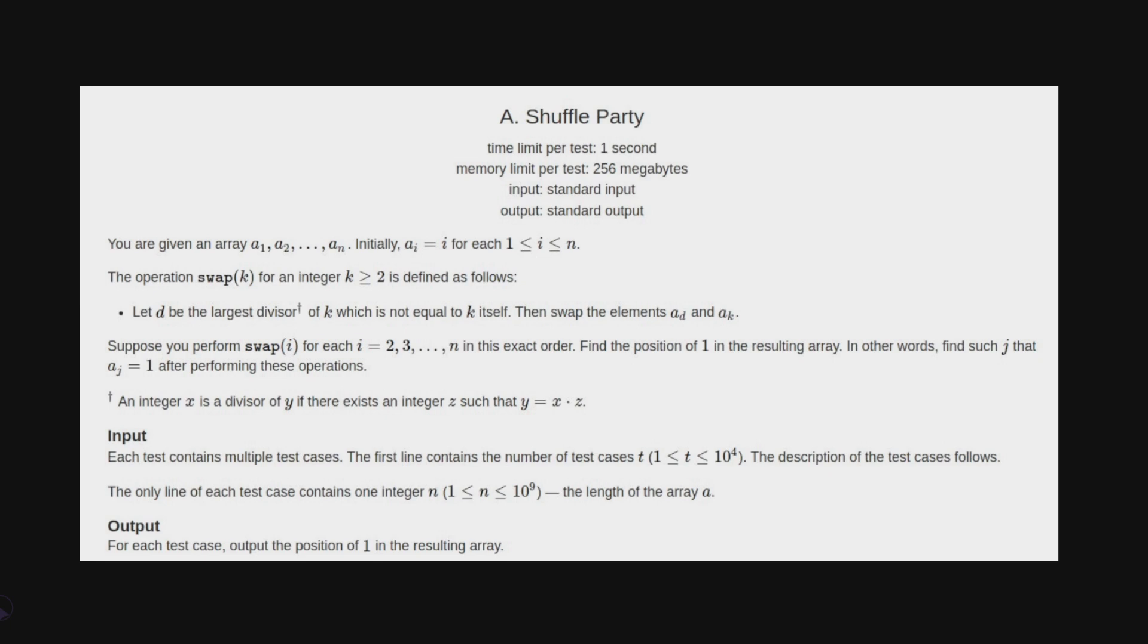An integer x is a divisor of y if there exists an integer z such that y equals x times z. There are multiple test cases and n is in range from 1 to 10^4.